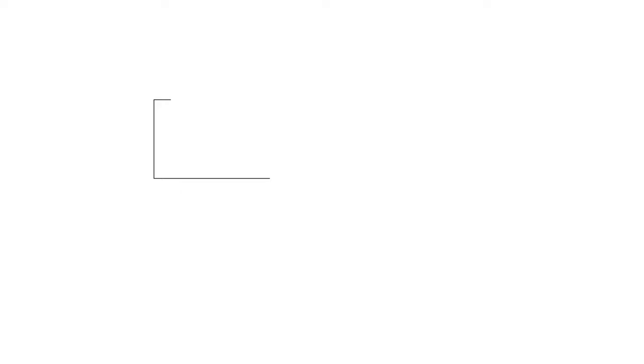Most of the time, the feedback is negative. Using the thermostatically controlled heater as an example, we can identify the controller, the system being controlled, also referred to as the plant, the specified input, the system output, which is also the measured feedback, and the control signal.